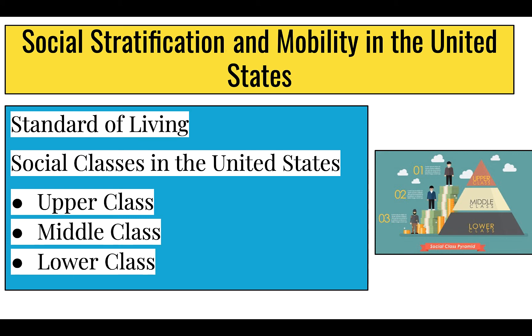Looking at social stratification and mobility in the U.S.: the standard of living has increased quite a bit over the last hundred years, meaning the level of wealth available to acquire material necessities and maintain lifestyles. Standard of living is based on income, employment, social class, poverty rates, and housing affordability — which is why it is decreasing in the modern era. In a capitalistic system, everything costs a lot of money, and if you have money, you're golden; if you don't, you'll struggle.